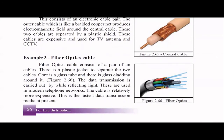Then comes fiber optic, which is very popular these days — for example, SLT fiber optic connections. Fiber optics have a pair of cables with a plastic jacket separating them. The core is actually a glass tube with glass cladding around it, which is why you should not bend fiber optic cables — the glass can break. Data transmission is carried out by reflecting light. These cables are relatively expensive but very fast — currently the fastest data transmission medium available.